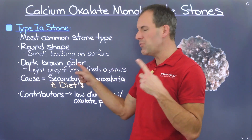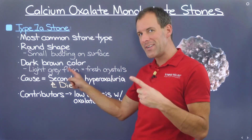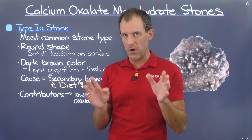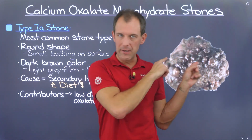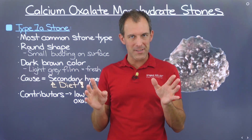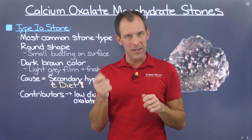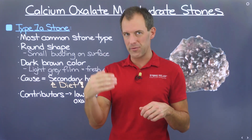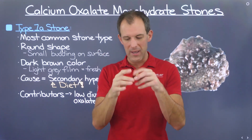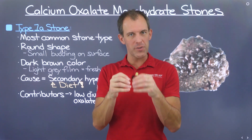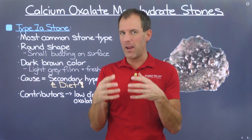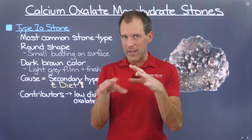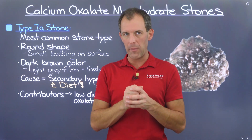Now, if you see a light gray film on the surface of this type of kidney stone after you've passed it, this is indicative of an active stage of crystallization. Those whitish crystals on top have not had time to absorb pigment from the urine yet, and that's why they give it that gray appearance.